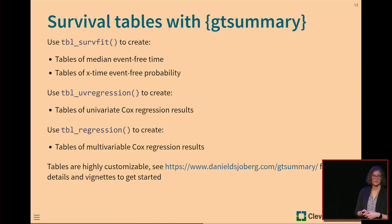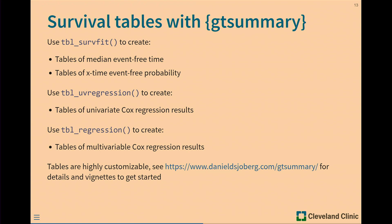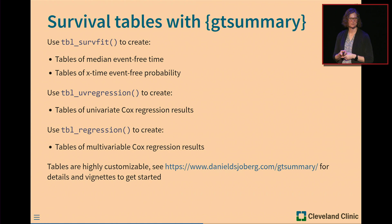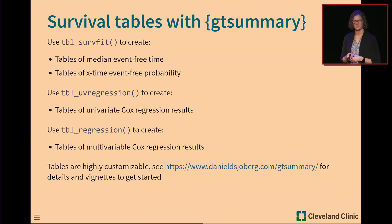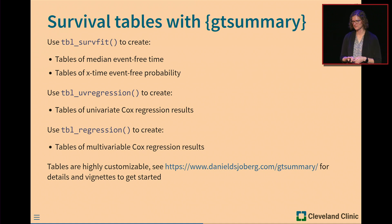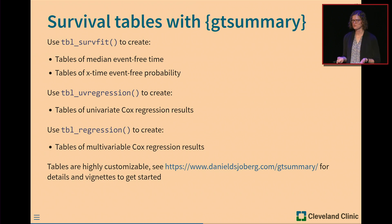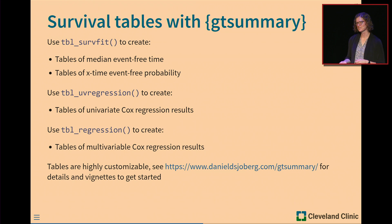For anyone not familiar with the gtsummary package: if you work in biomedical research or anything with patient or clinical data, it's an essential package for creating summary tables of both descriptive statistics and regression model results. We'll focus on three main functions that have built-in support for survival analysis: tbl_survfit for median event-free time and X-time event-free probability tables, tbl_uvregression for univariate Cox regression results, and tbl_regression for multivariable Cox regression results. Those last two work with many types of regression models.